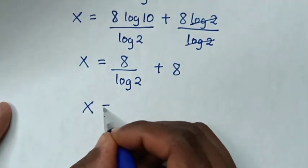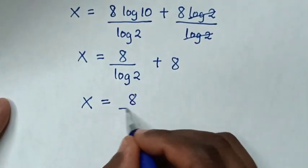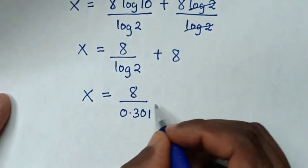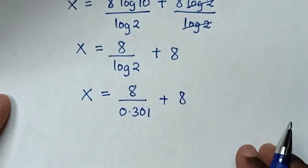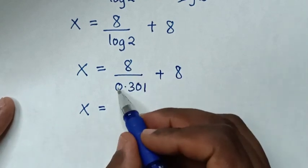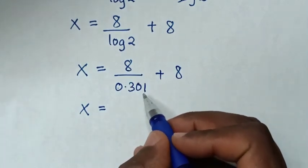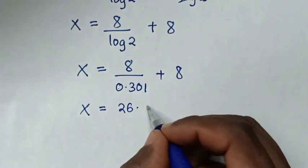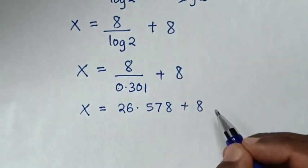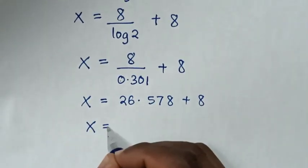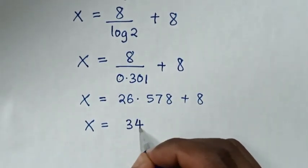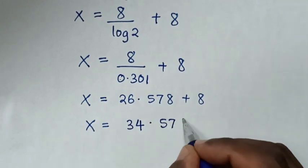it will be x is equal to 8 over log of 2 is 0.301, then plus 8. Then it will be x is equal to 8 divided by 0.301, it is 26.578, then plus 8. Then it will be x is equal to 26 plus 8, it is 34, then 0.578.